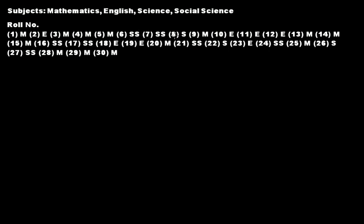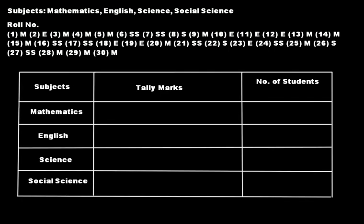The student having roll number 8 likes science more than other subjects. This is the list of 30 students and it tells us their preference — which subject they like most. However, looking at this list, you cannot quickly tell how many students like mathematics more than English, science, and social science, or how many like English more, and so on.